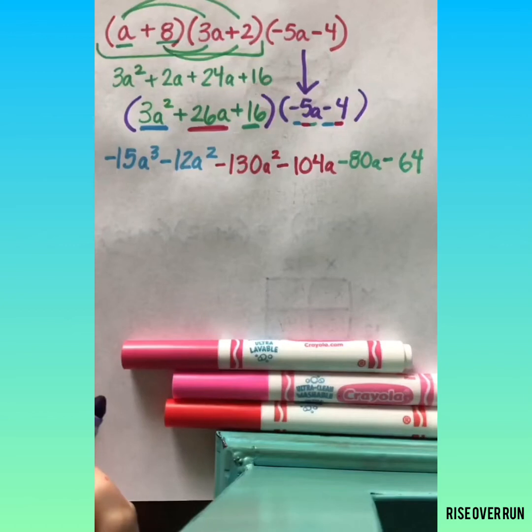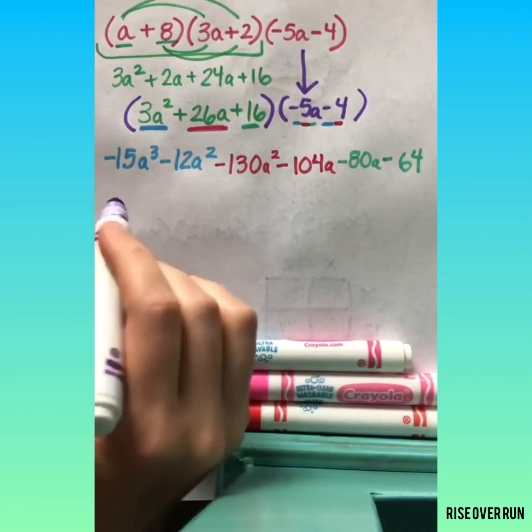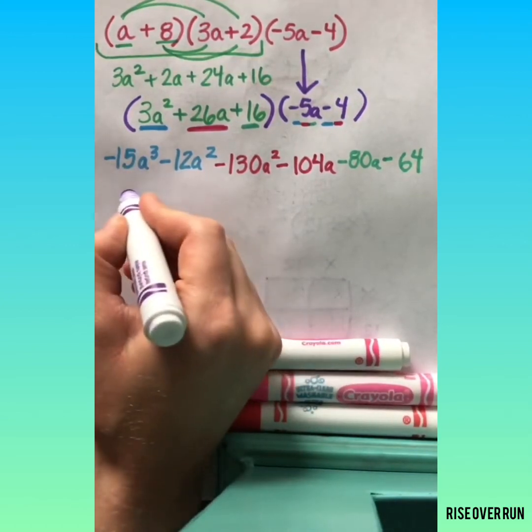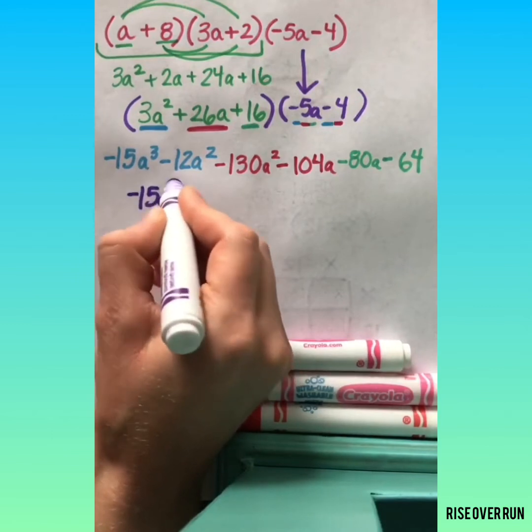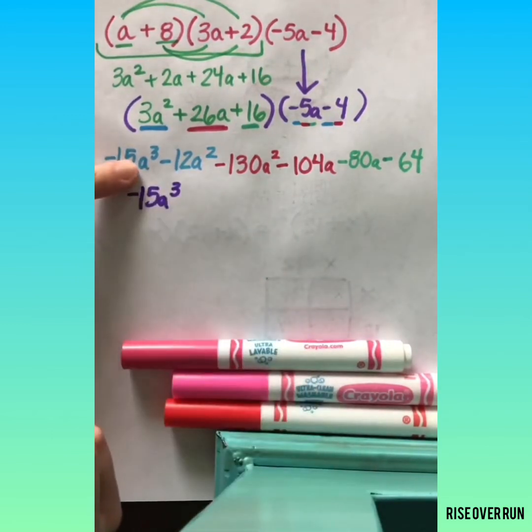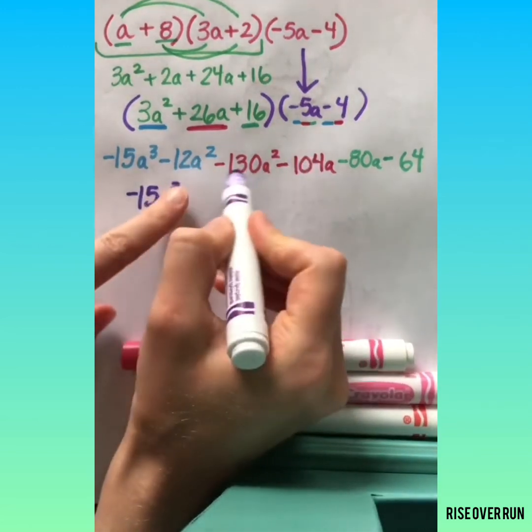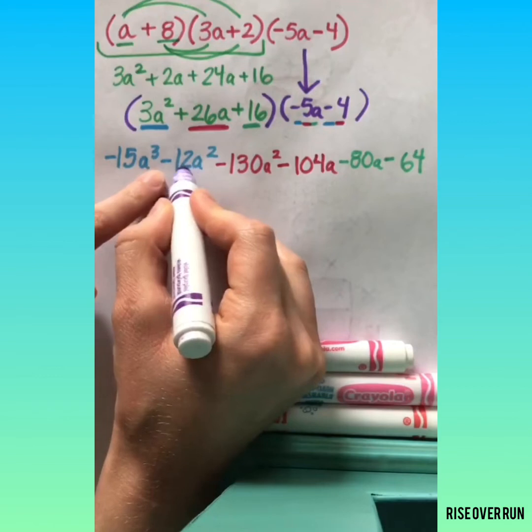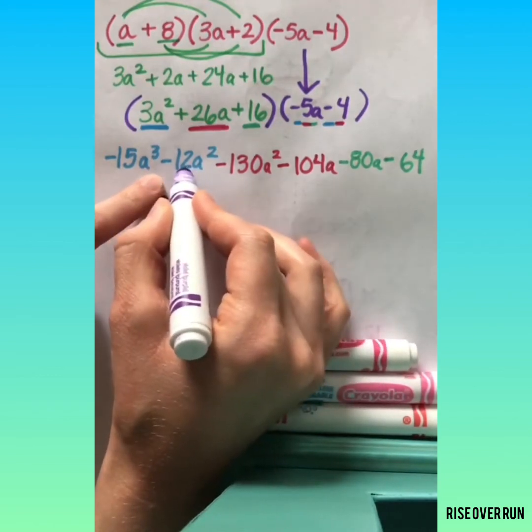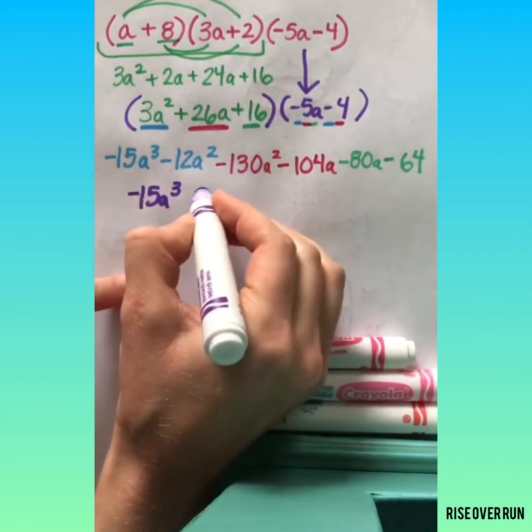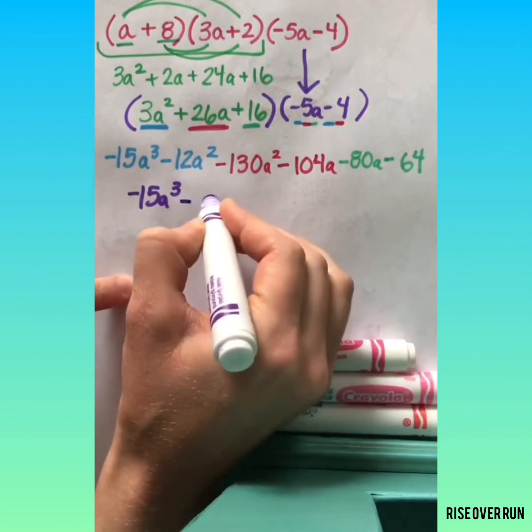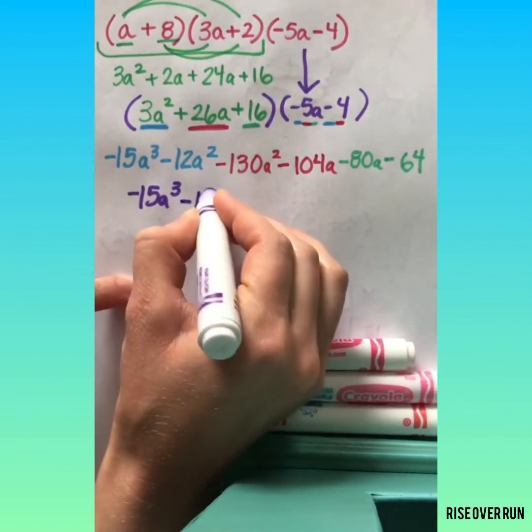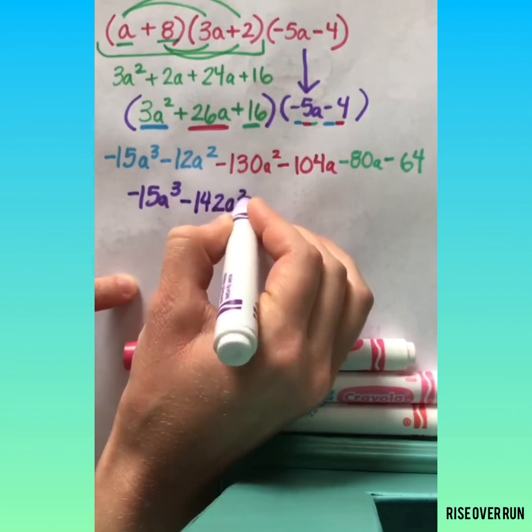Now let's look for like terms and write this in standard form. Negative 15A cubed. That's the only one where I have an exponent of 3. I have two items here that have A squared. So I need to combine these coefficients. I have a negative 12 and a negative 130. So that gives me a negative 142A squared.